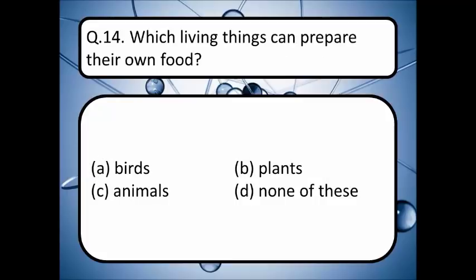Which living thing can prepare its own food? A is birds, B is plants, C is animals, and D is none of these. The correct answer is B — plants.